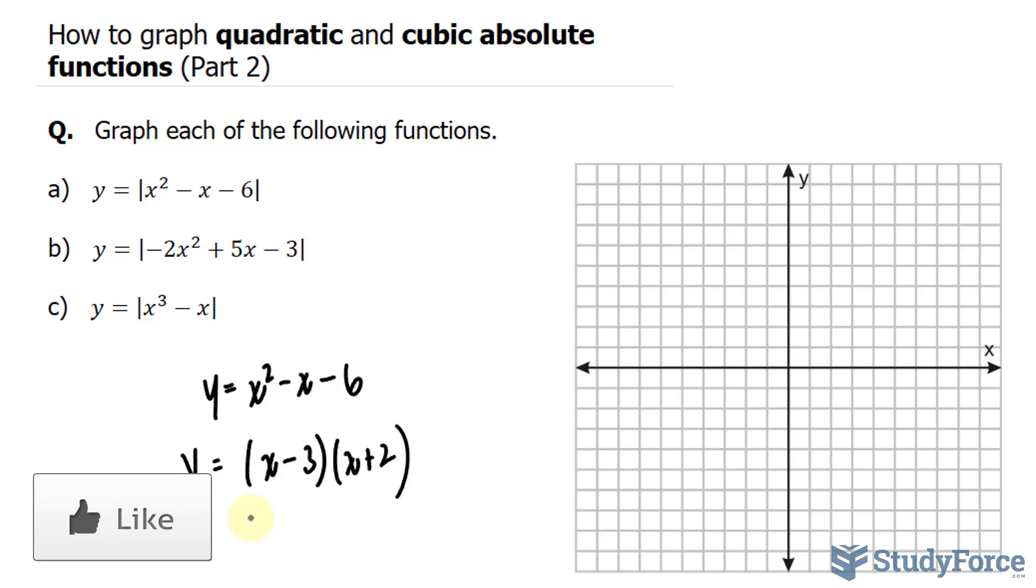Solving, I set y is equal to 0, and I should end up with the point 3 and 0 and negative 2 and 0. Plotting these on an xy plane, we should have a point right here and a point right here.